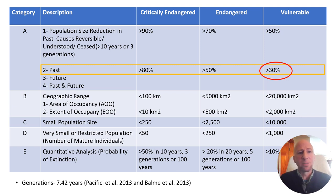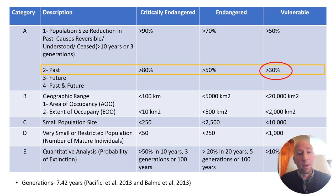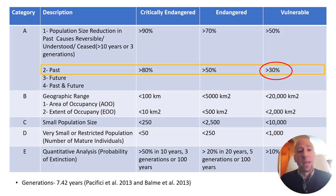Looking at the map for the previous assessment in 2007 leading to 2016, we saw a reduction in extent of occupancy by 61% in that seven-year period. This is clearly a problem of data deficiency, not a drastic actual reduction of 61% of their range in that short period. We got a period of a lot of data collection that really helped us improve our accuracy of occupancy for leopards across their range.